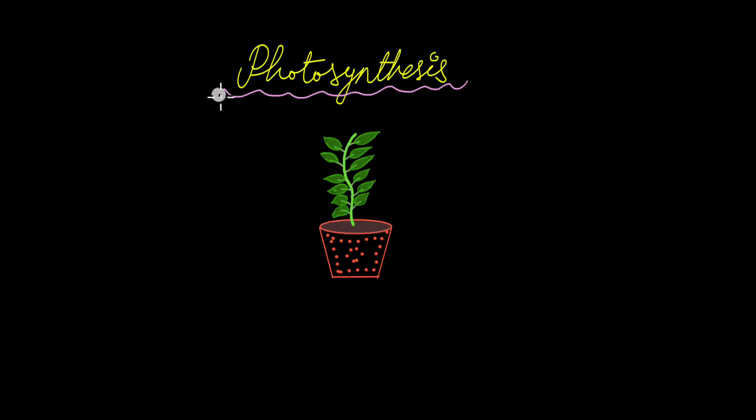By now you must be familiar with the fact that plants make their own food by the process of photosynthesis. They use the energy from sunlight and carbon dioxide in the air to produce glucose, and then whenever they need energy they break down this glucose to release that energy and use it for their day-to-day activities.